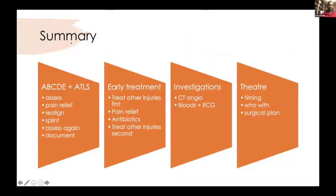Summary for vascular injuries and mangled extremities: ABCDE, ATLS, early treatment. Document everything, obtain investigations, and then theater — with timing and team selection being critical.